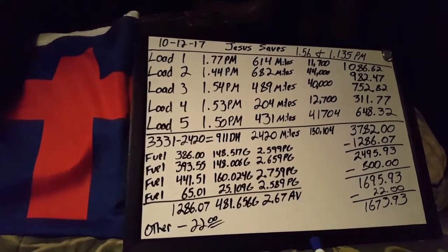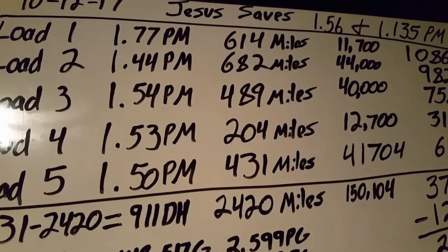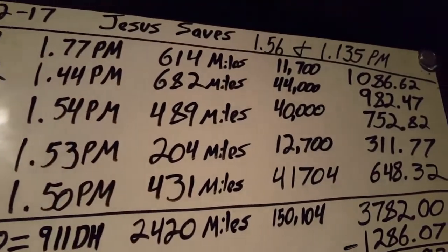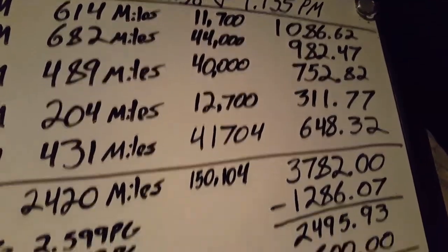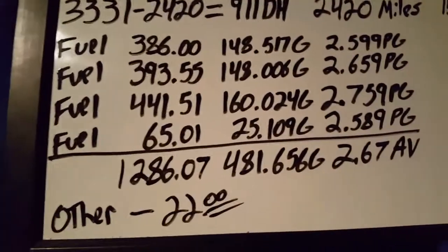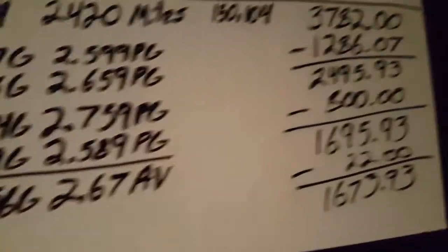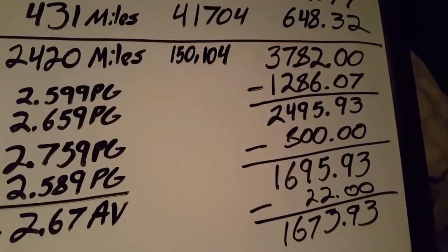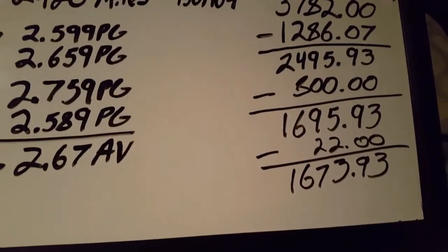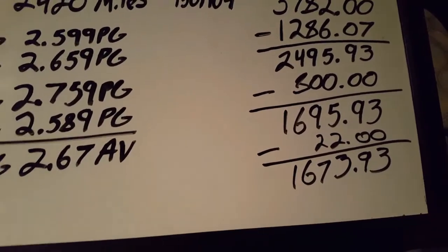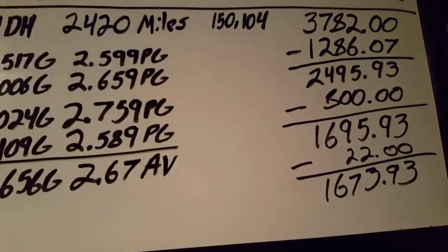So there it is, I'll get it a little closer so you can see it. There's the loads and the numbers and the pay, the mileage and the pay. Here's the fuel that was spent. All together we had $3,782 total revenue, $1,286 in fuel, $800 in fixed. All that took out left us with $1,673.93.